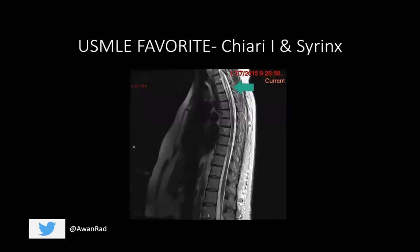A very high yield association on the USMLE is Chiari 1 and a syrinx — they love this association. Chiari 1 has a high association with the syrinx, which is cystic dilation of the central spinal canal. On this T2-weighted image of the spine, the bright signal is the CSF and the gray signal is the spinal cord. Notice in the middle of the spinal cord, there is a cystic bright dilation within the central canal — this is a syrinx. In some reports, anywhere from 35 to 70% of patients with Chiari 1 have a syrinx.